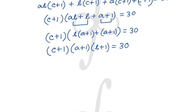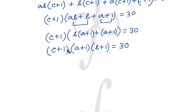This factorization helps us solve the question. Note that C+1, A+1, and B+1 are all natural numbers, because A, B, C were single-digit whole numbers — they are the digits of a three-digit number. So A+1, B+1, and C+1 are natural numbers, and three natural numbers multiply to give 30.